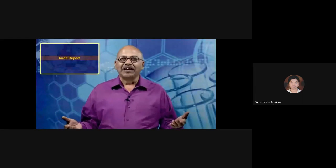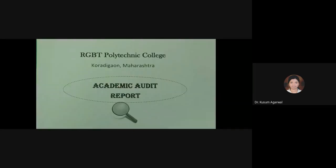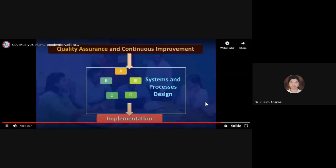After completion of academic audit, a report is prepared by the internal quality assurance cell pointing out the strengths, weaknesses, and concerns. It suggests significant actions to improve the quality of the program as a whole, may suggest policy guidelines related to specific criteria, improves the design of quality systems and processes, and prepares an action plan for taking corrective and preventive actions for improving the quality of programs as a whole.